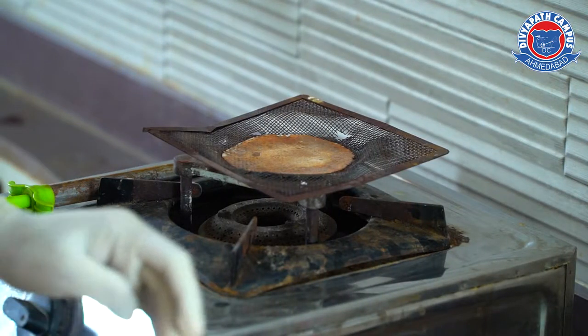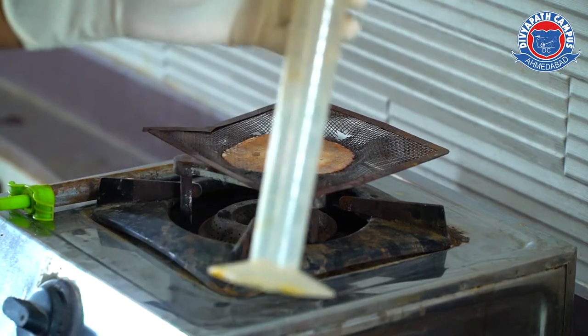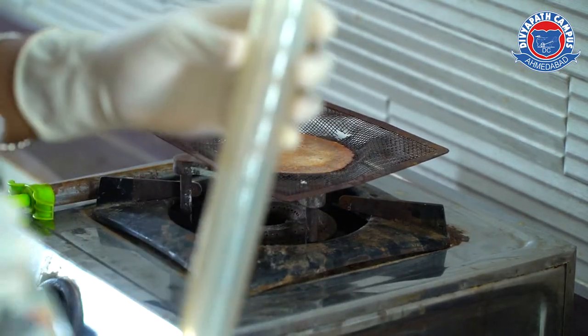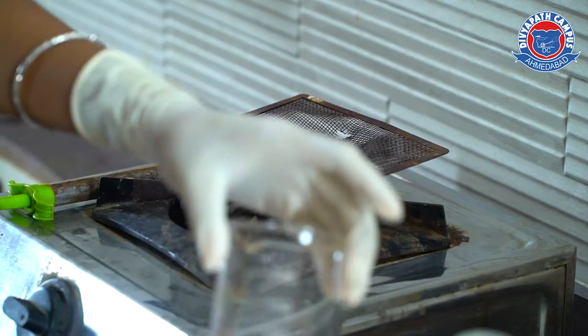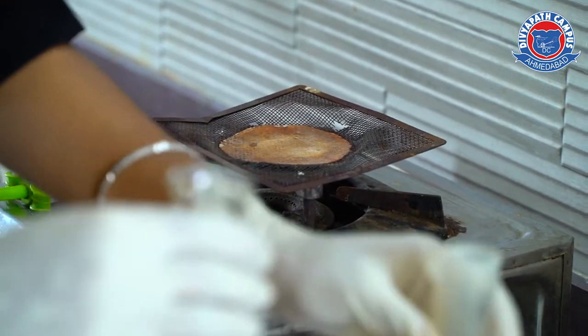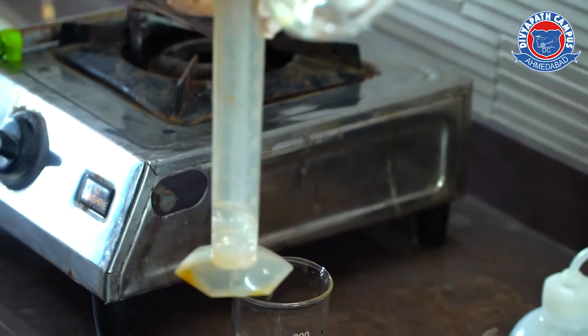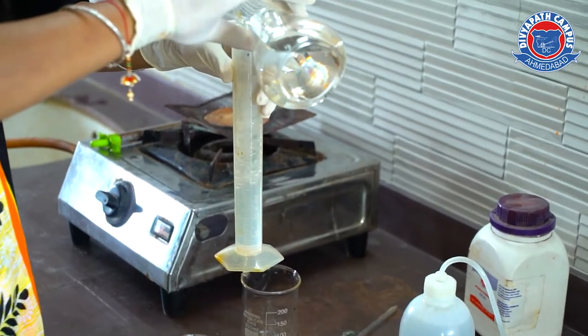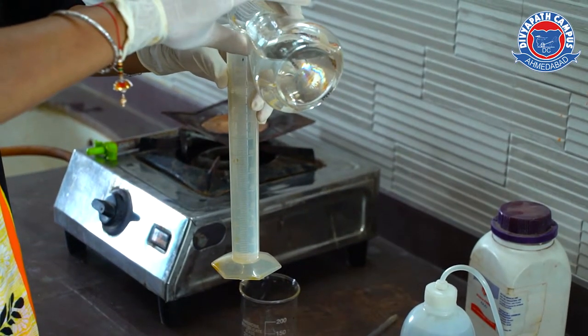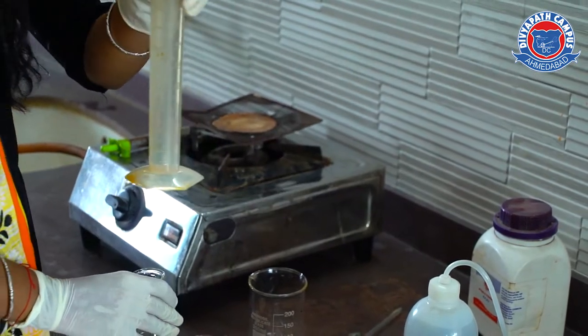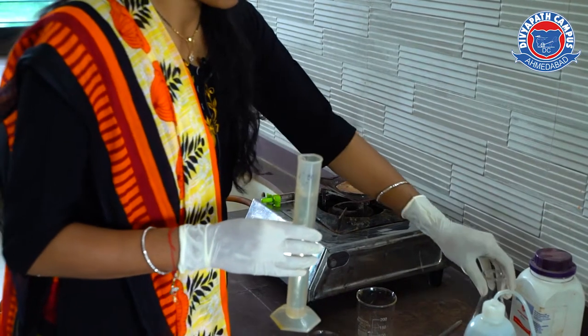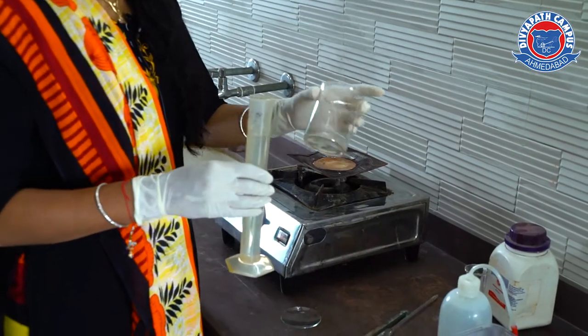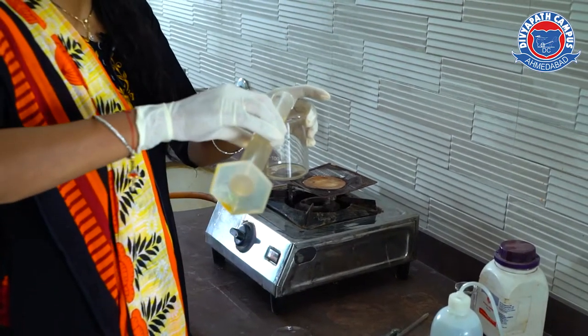We have to take 100 ml distilled water in measuring cylinder and transfer it into the 250 ml beaker. You can see, it is 100 ml distilled water. We will transfer it in a clean 250 ml beaker.